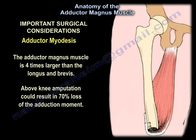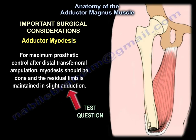The adductor magnus muscle is four times larger than the adductor longus and brevis. Above-knee amputation could result in 70% loss of adduction moment. For maximum prosthetic control after distal transfemoral amputation, myodesis should be done and the residual limb maintained in slight adduction — that's usually a test question.